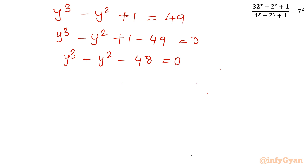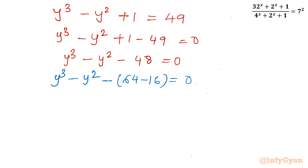Now there are two methods to solve this cubic equation: the first is synthetic division and rational root theorem, and the second is algebraic manipulation. I will use the second method. I will write y³ − y² and rewrite 48 as 64 − 16, then expand: y³ − y² − 64 + 16 = 0.